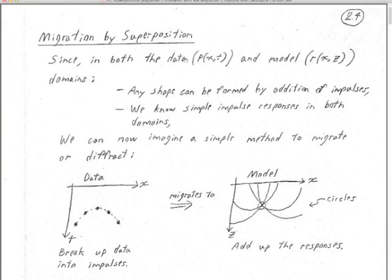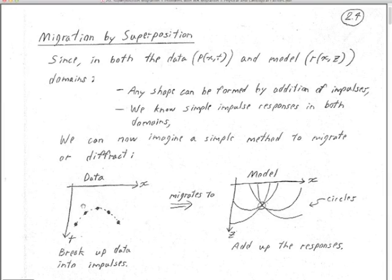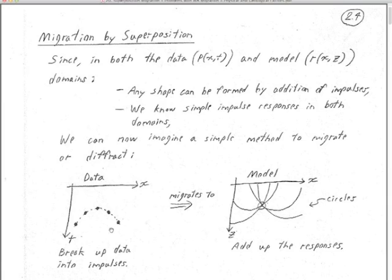Whether we're looking at our 2D data set — P of X and T — or our model, which is our reflectivity cross-section R of X and Z, in either of those domains, any shape you can form by addition of impulses. Given that we have seismograms at discrete values of X and sampled in time at discrete values, every time sample on every seismogram is just another impulse. We've already broken up our hyperbola into just a curve of lined-up points. Impulses are all we have.